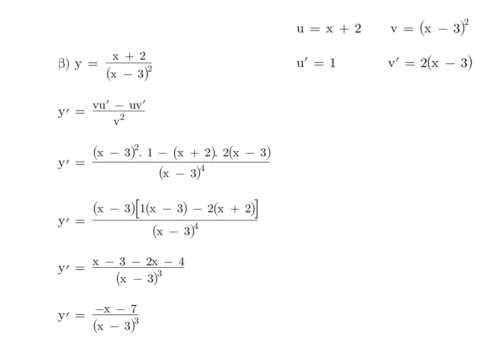Our second example, we let u equal x plus 2, so u dash is 1, and v equals x minus 3 all squared. You bring the power down the front, which is 2, times by the differential inside, which is 1, so you get 2 outside of x minus 3. Substituting into our formula, vu dash minus uv dash all over v squared. We will also practice taking a common factor out. The only common factor is the x minus 3 brackets.